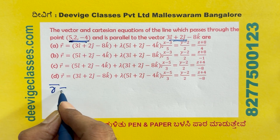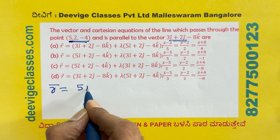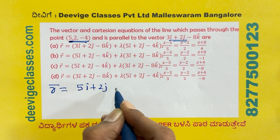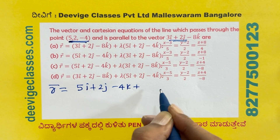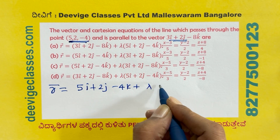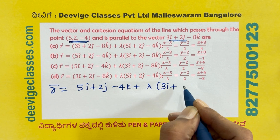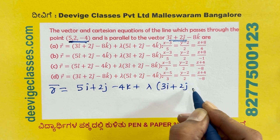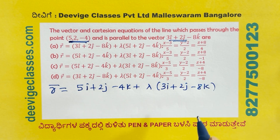The vector equation is: R = (5i-cap plus 2j-cap minus 4k-cap) plus lambda (3i-cap plus 2j-cap minus 8k-cap).